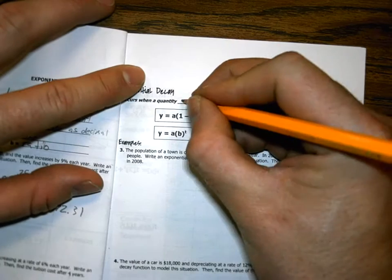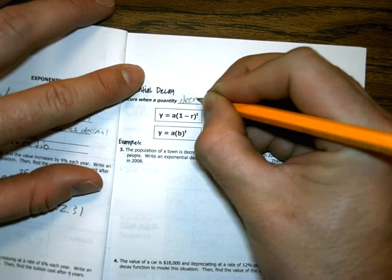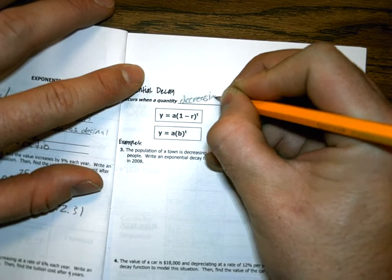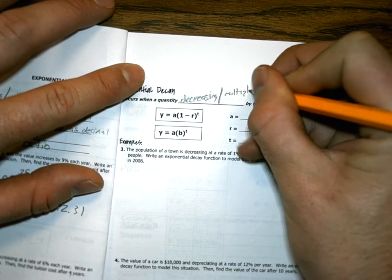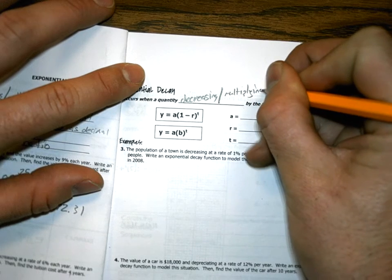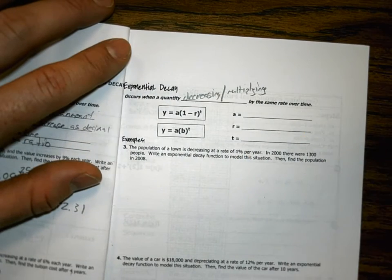It occurs when a quantity is decreasing slash multiplying by the same rate over and over.